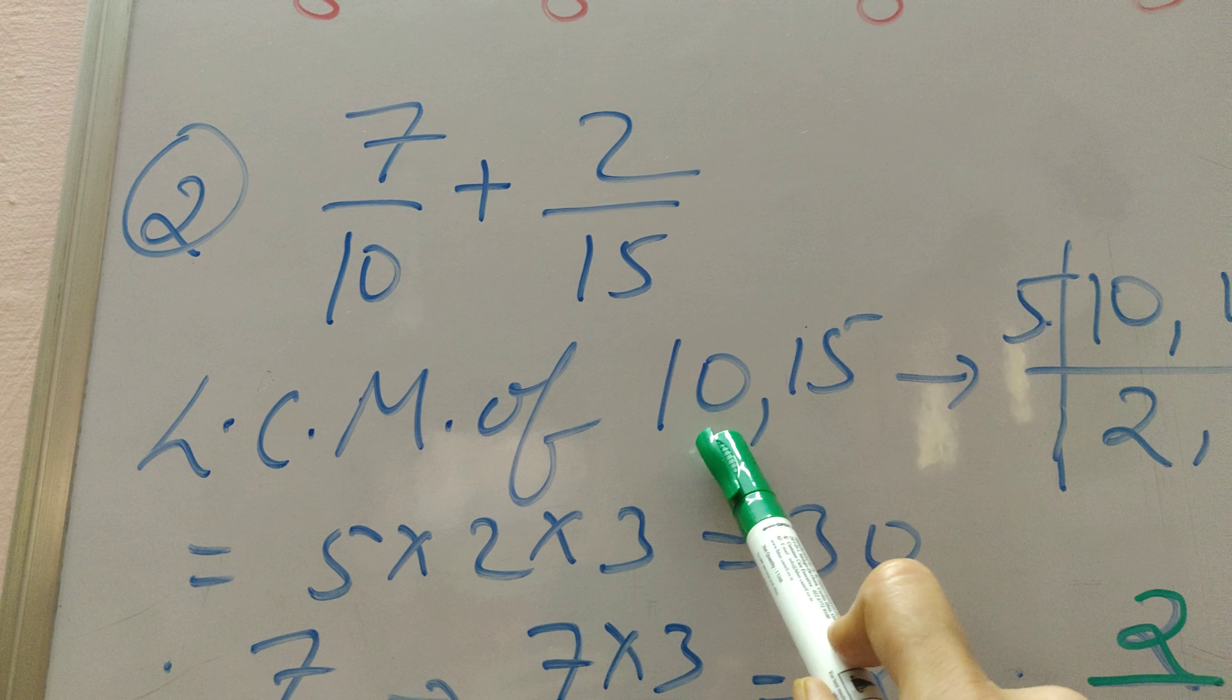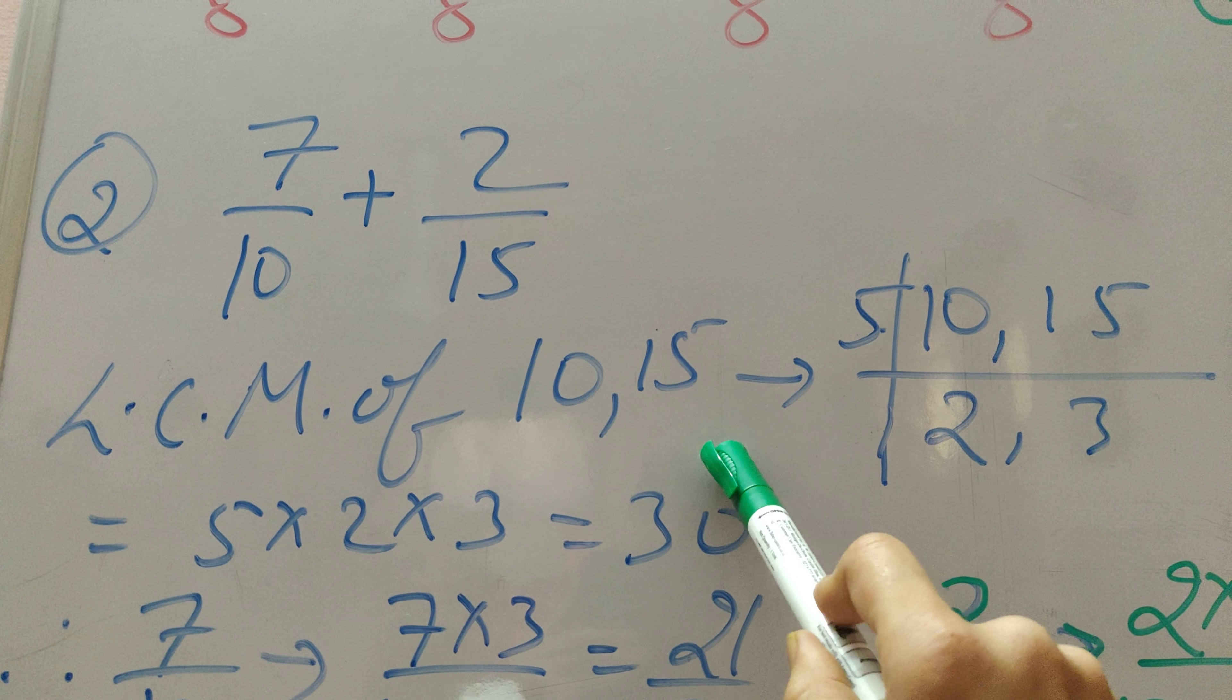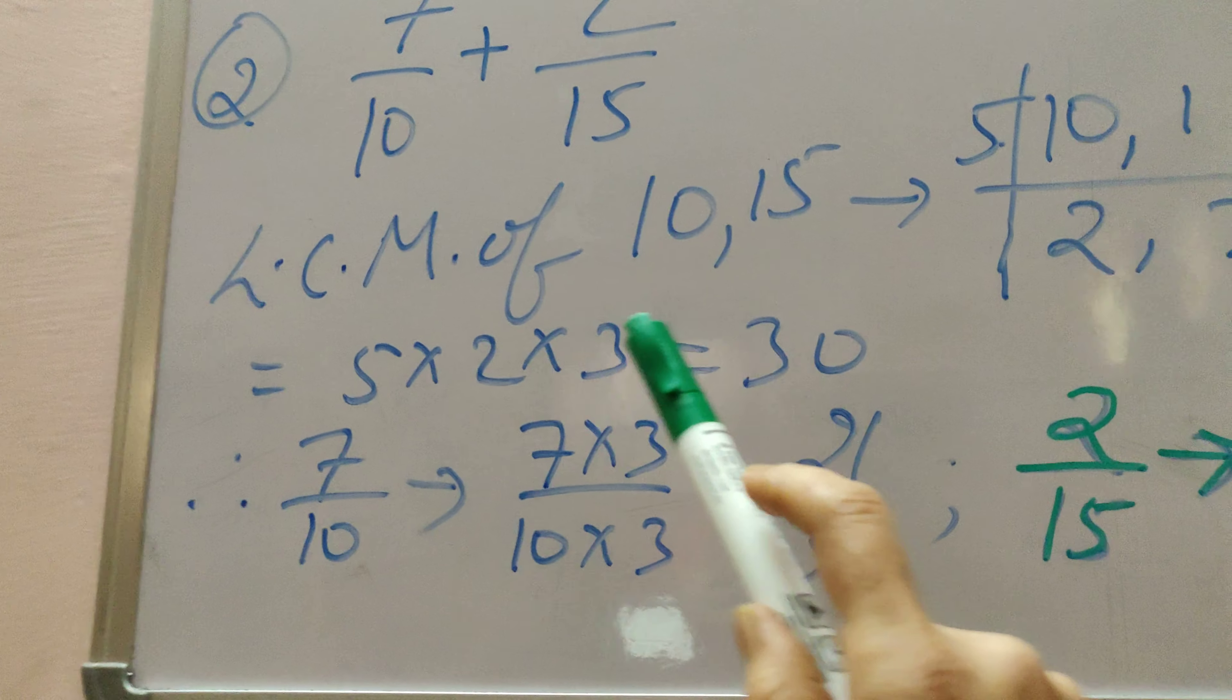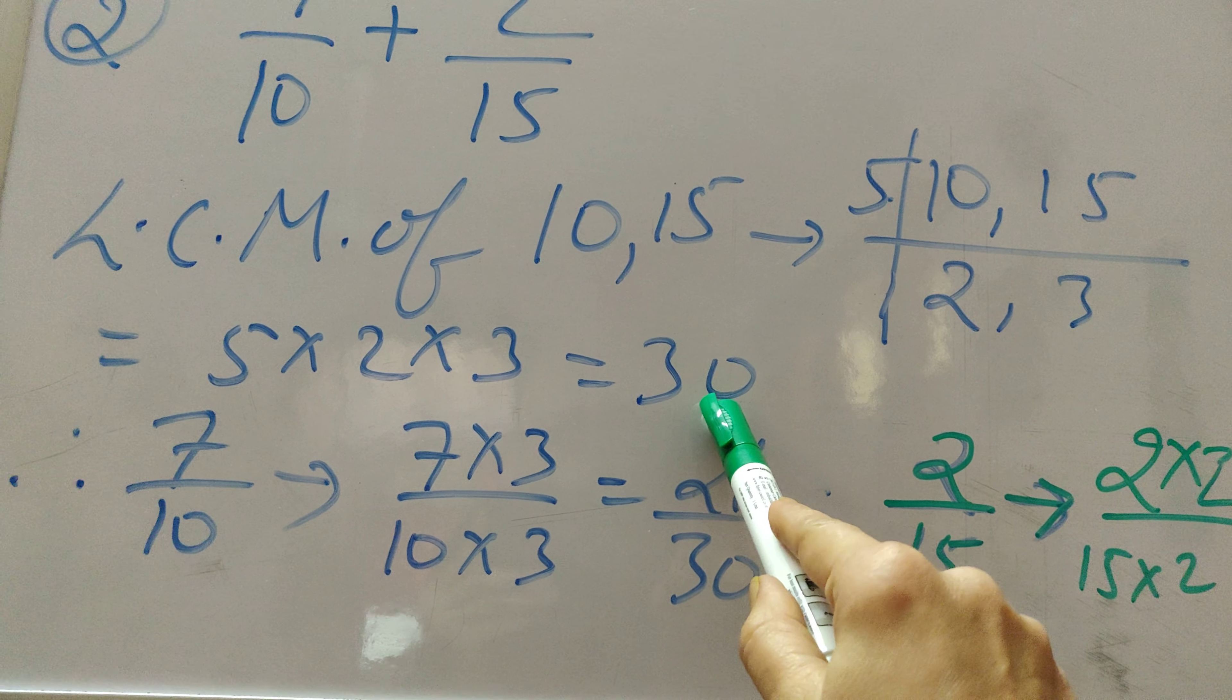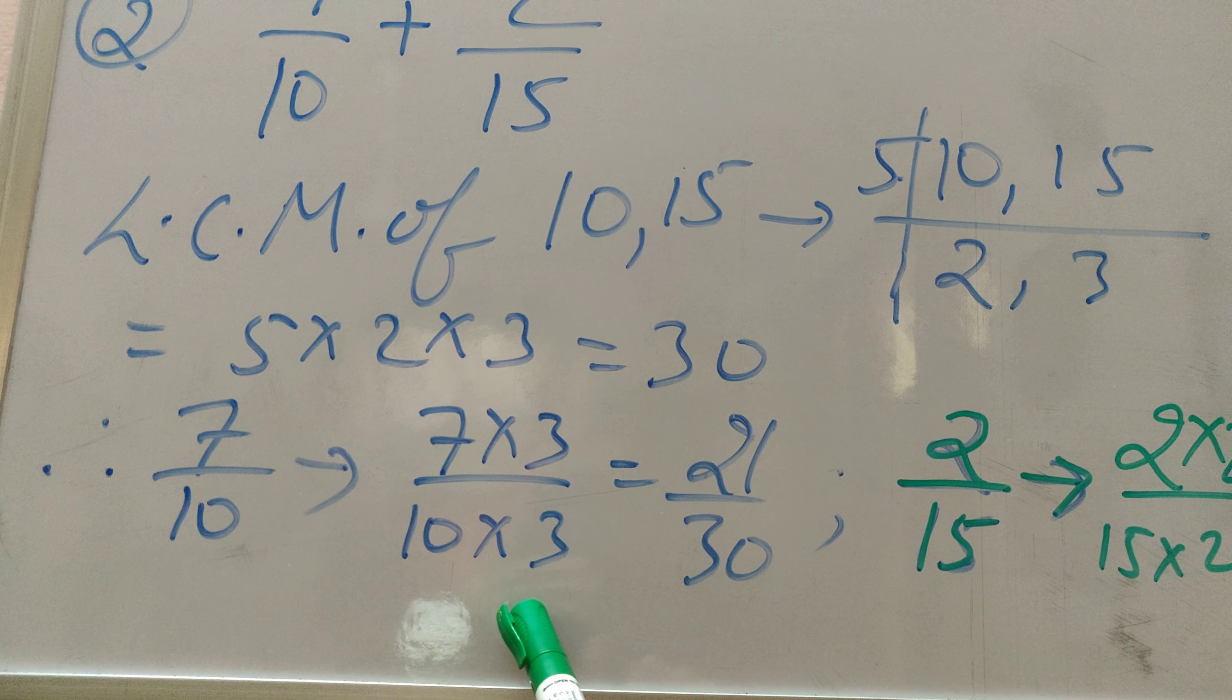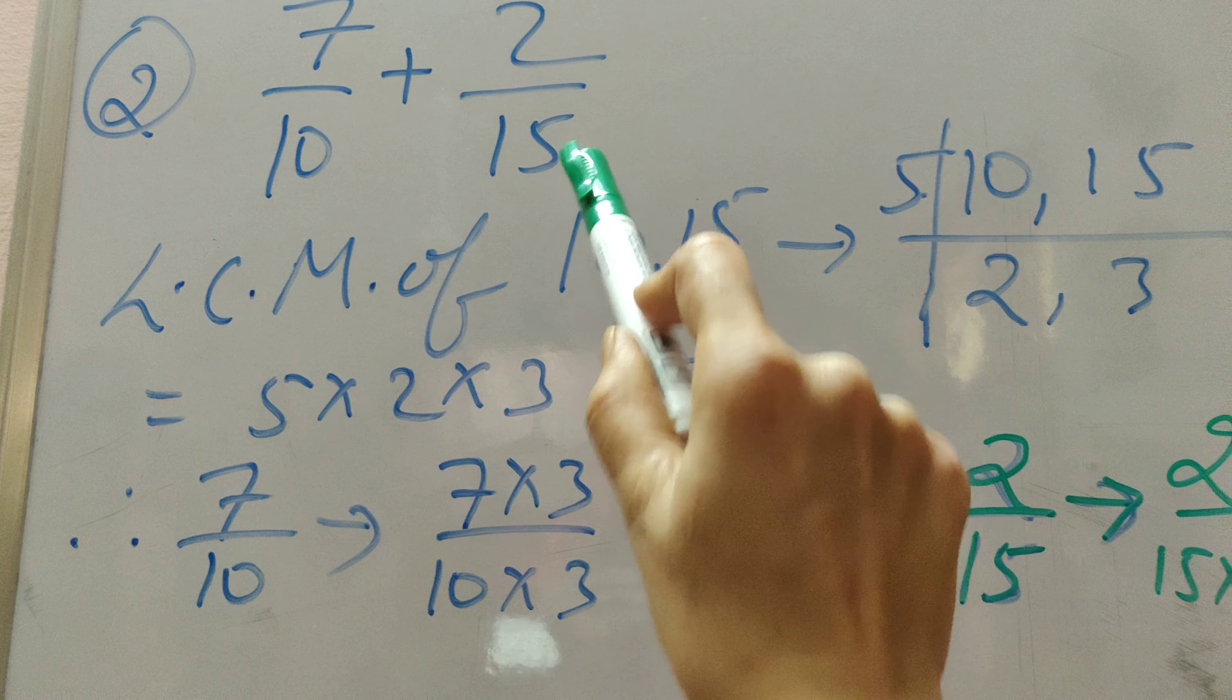We will do the LCM of 10 and 15, that is the least common multiple of 10 and 15. Here, I have shown you that you can do it like this. We will get the LCM as 5 into 2 into 3, that is 30. So how can we convert this fraction in terms of 30? 30 is the common denominator that we can take now because the LCM of 10 and 15 is 30.